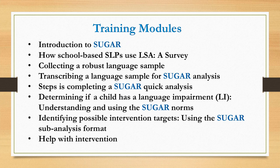There are eight training modules in SUGAR, and it's our hope that you'll spend time with each one. This is the first. As you progress through each module, you'll learn the SUGAR methodology and gain an understanding of the reasons behind some of the decisions we made. It's important to understand our rationale and to follow the SUGAR procedures. For example, if you don't collect a robust sample as we suggest, a child may do poorly in the analysis portion.